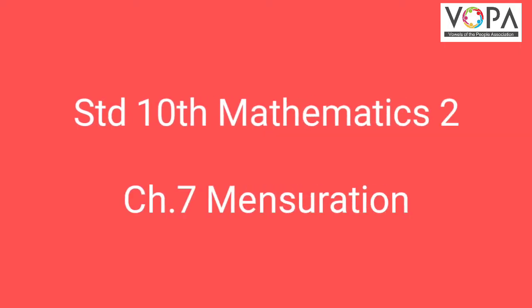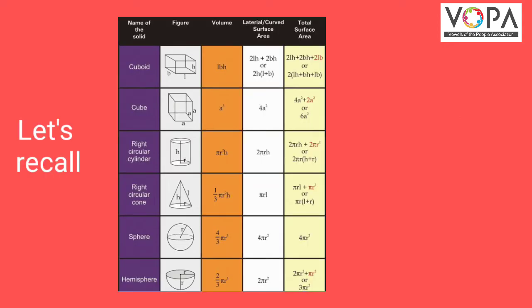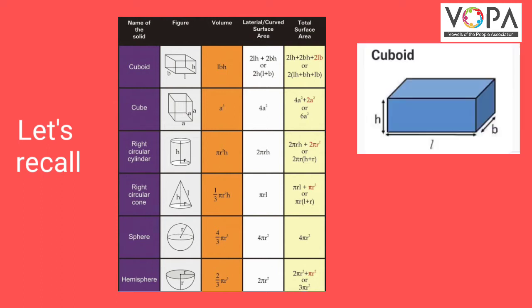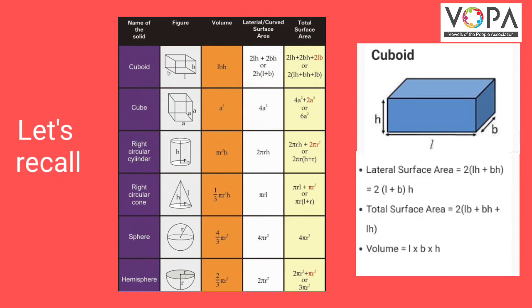Standard 10 mathematics, Chapter 7: Mensuration. In standard 9 you studied different types of three-dimensional objects, their surface areas and volumes. Let us recall about them. First, a cuboid — a cuboid has length, breadth, and height, so its